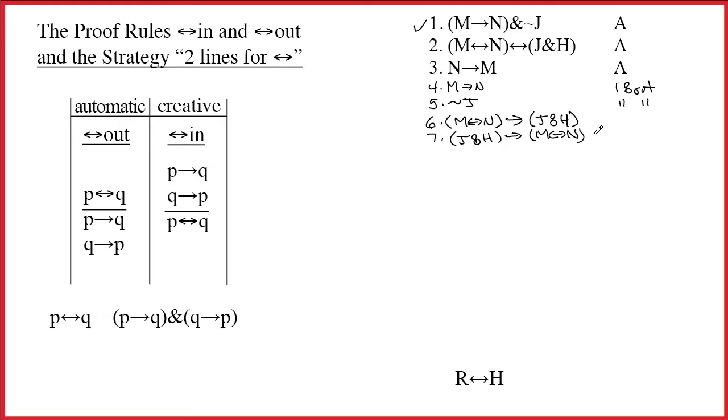M double-arrow N. I'm trying to write kind of small because I know this proof is actually going to take up all the space I've got. So now I justify both of these by two double-arrow out, and I will use the ditto marks just like I do when I'm doing ampersand out. And now I can check off line 2.